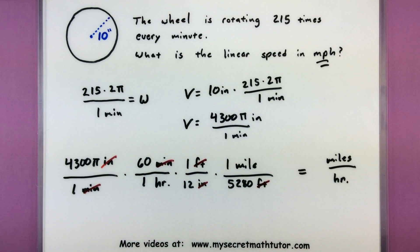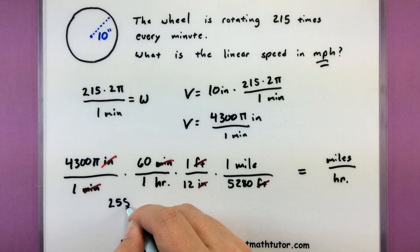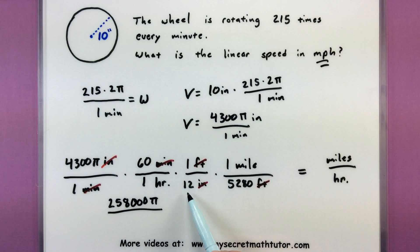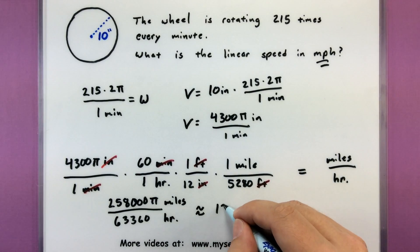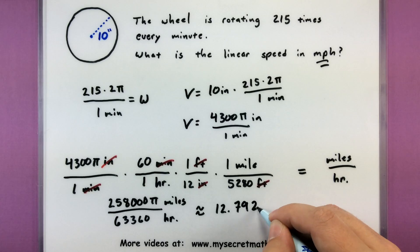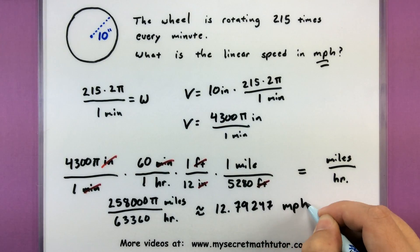And now I'll multiply the numbers that are left over and see what I get. All right so let's see what we got. I got 4,300π multiplied by 60. So that's 25,800π. And on the bottom I have 1 times 1 times 12 times 5,280. And the units this will be in miles per hour since that's the only units left. Again using my calculator to kind of help with this. I got around 12.79247 miles per hour. Not bad.